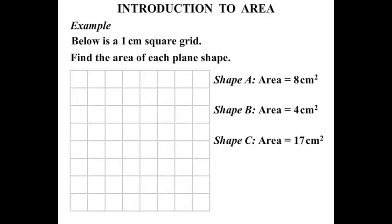Now the next couple of shapes we're going to do two things. We're going to count them up and then we'll see if there's a shortcut. So shape D is a rectangle.